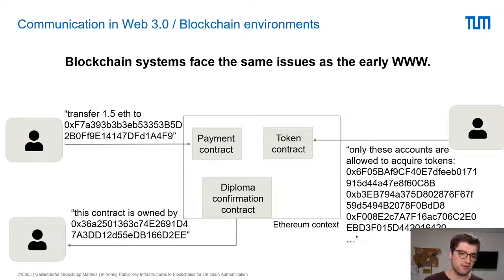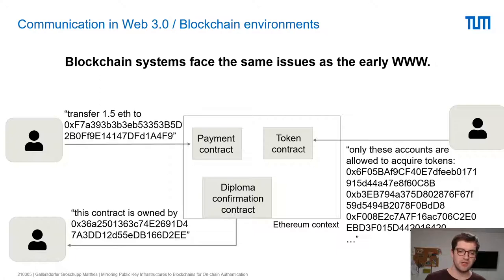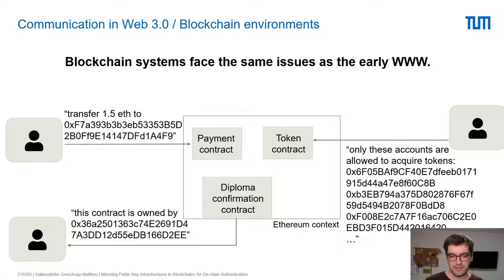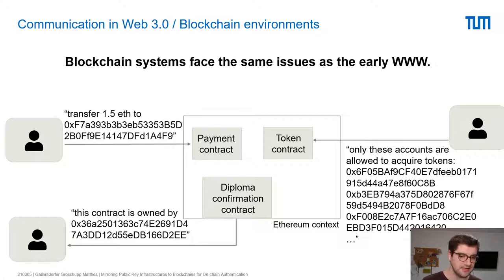Blockchain systems like Bitcoin or in our case Ethereum face the same issues as in the early World Wide Web. If you want to interact with smart contracts or send funds to other users, you need to rely on a 40-character-long address in Ethereum. This is a hard concept for many users, complicates the whole system, and even a small typing error can lead to devastating losses.